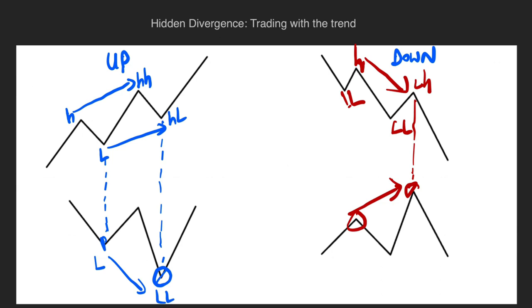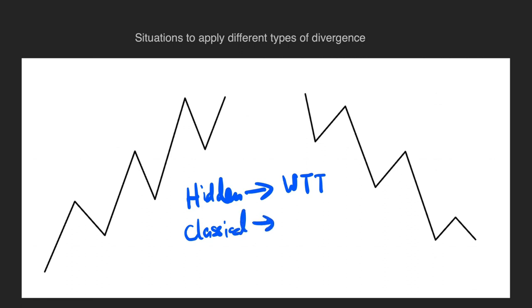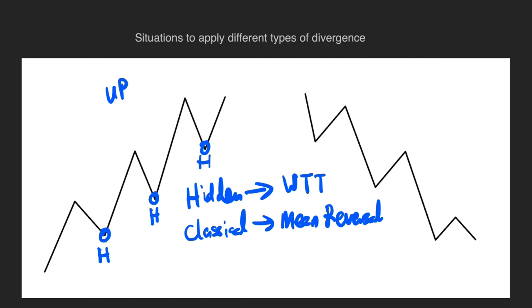When do you use the different types of divergence? Hidden divergence is used with the trend, whereas classical divergence is used where it is a mean reversion — so you are doing a little bit of a reversal. If this is an uptrend, you're going to find hidden divergence at the pullback points, meaning your indicator needs to go lower than the previous low to spot the hidden divergence. In a downtrend, the hidden divergence will be found at the top, where you want to see your indicator pulling higher than the previous high while price makes a lower high.